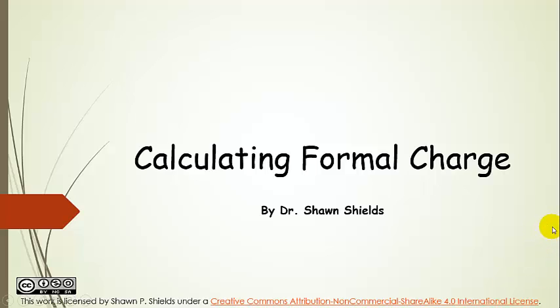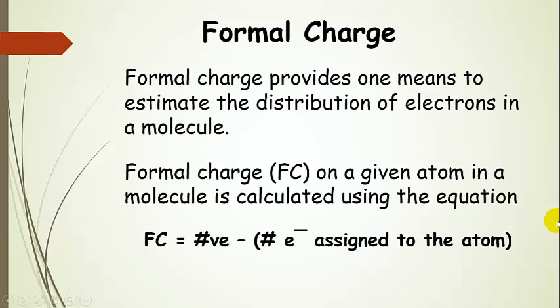Calculating formal charge. As we build up to drawing Lewis structures for molecules, the last thing we need to talk about is formal charge. Basically, it's a way to estimate the distribution of electrons — and therefore charge — in a molecule. We find the formal charge on a given atom by taking the number of valence electrons and subtracting the number of electrons assigned to that atom. We'll see how to assign those electrons and then calculate formal charge on atoms in a couple of molecules.